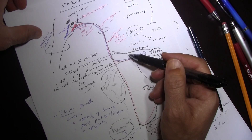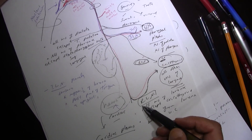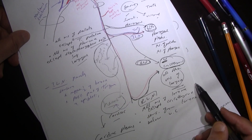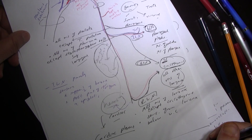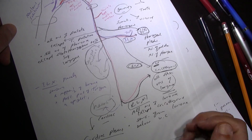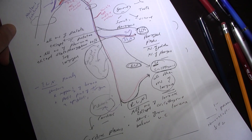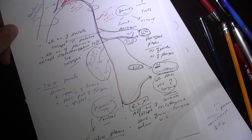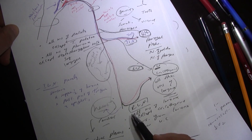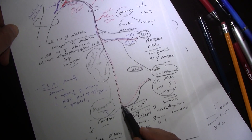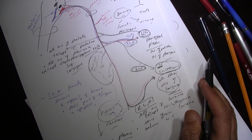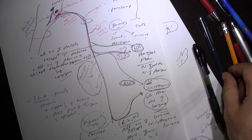One important thing to remember: the right recurrent laryngeal nerve arises from the vagus in the neck, while the left recurrent laryngeal nerve arises from the vagus in the thorax. The reason is that on the left side there is the ligamentum arteriosum — formerly the ductus arteriosus — which keeps the left recurrent laryngeal nerve down in the chest. On the right, there is no ductus arteriosus to hold it down, so it arises in the neck.